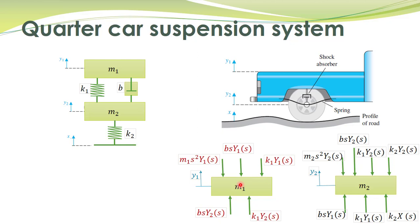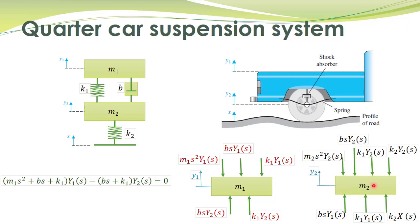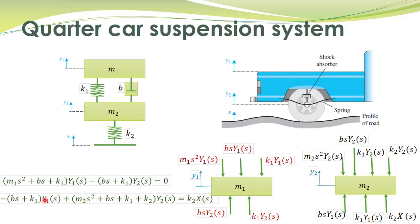Now that we have the free body diagrams, obtaining the mathematical model is straightforward. We write the force balance equations — the sum of downward forces equals the sum of upward forces. For M1, the downward forces and upward forces yield the first equation; terms brought to the left-hand side carry a negative sign. Similarly, for M2 we obtain the second equation. Together, these two equations describe the mathematical model for the quarter car suspension system.